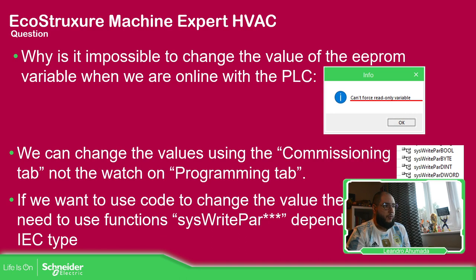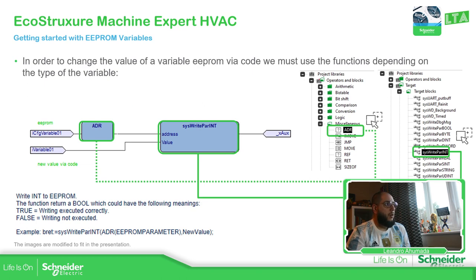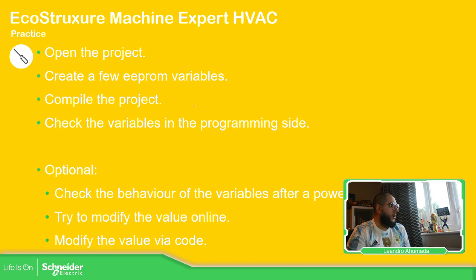To summarize how to use those functions: from Operators and Blocks, go to Miscellaneous to get the ADR operator — which gives the address of the EEPROM variable. Then from Target Blocks, use SysWriteBar and select the correct variable type. Drag and drop it in, add the EEPROM variable address and the new value — which can be another variable or a fixed value — and the output is a Boolean. Then compile and create your variables.